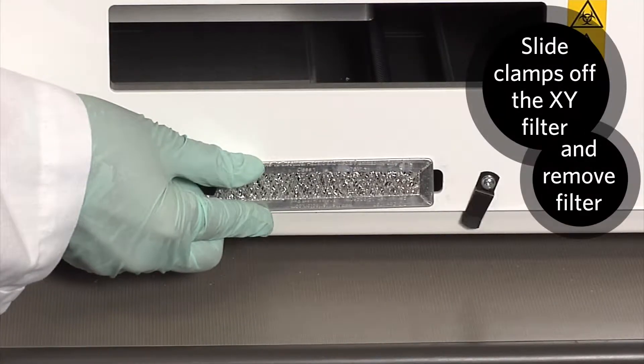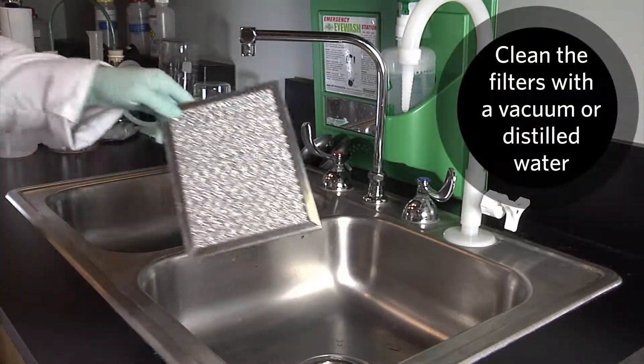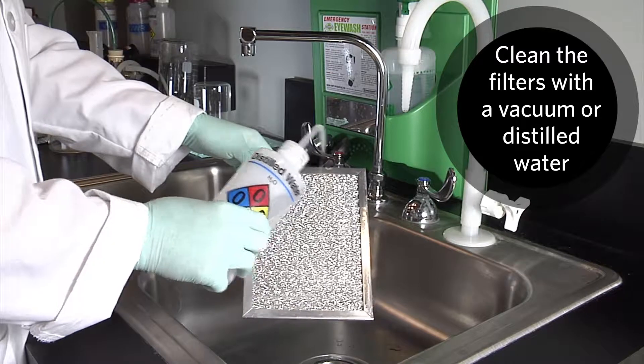Slide clamps off the silver filter inside the cover and remove the XY filter. Clean the filters with a vacuum or with distilled water.